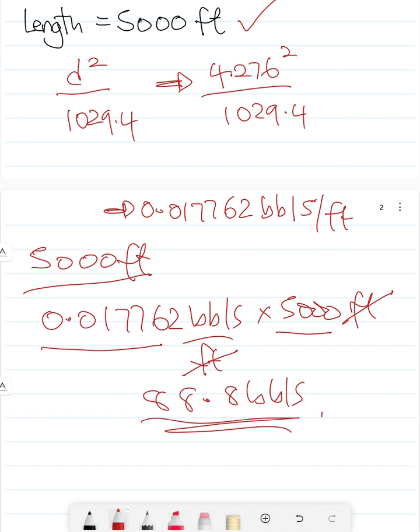Easy. So we have calculated the internal capacity of the pipe which is 0.017762 barrels per foot and the volume is 88.8 barrels.